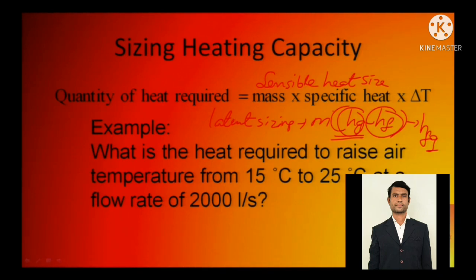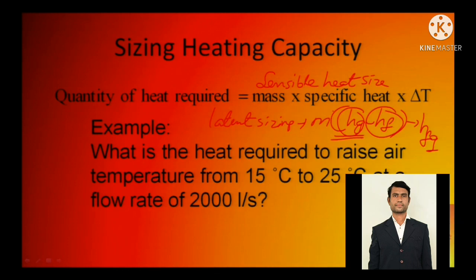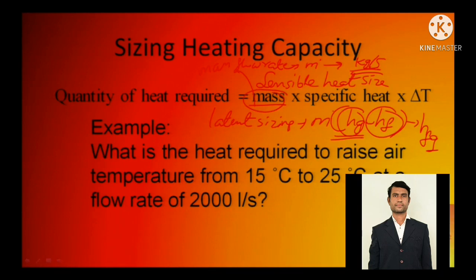Numerical example: what is the heat required to raise air temperature from 15 degrees Celsius to 25 degrees Celsius at a flow rate of 2000 litres per second? Delta T is 10 degrees Celsius. Since it is air, you need to convert from litres per second to kilograms per second — had it been water, the conversion would be simpler. The mass flow rate, referred to as m-dot with units of kg per second, is used in the equation.